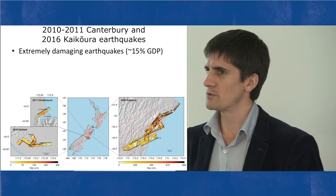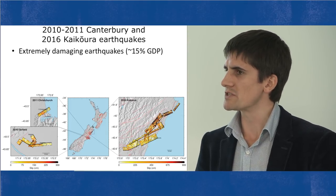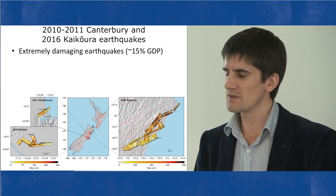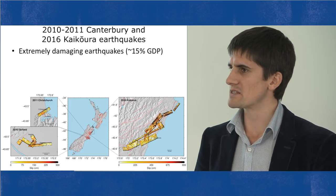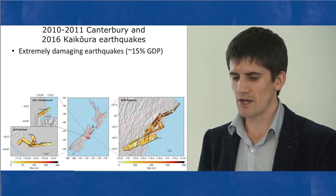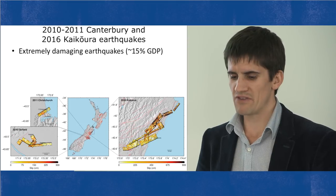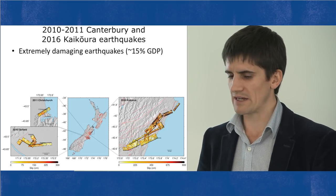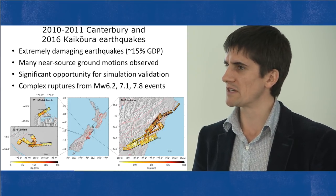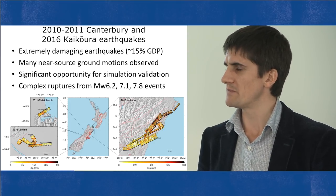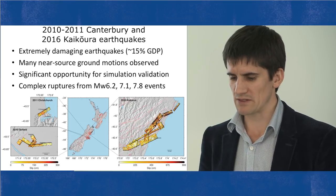We are now able to do substantially more rigorous modelling using physics-based approaches — like what weather forecasting does. The Canterbury and Kaikōura earthquakes have been particularly damaging but have also produced many ground motions that are important for developing these predictive models, allowing us to better forecast what we might expect in the future.